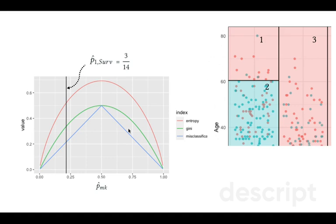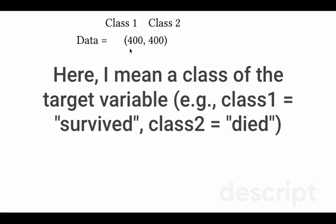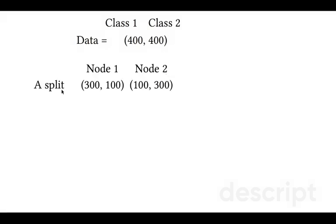Now why do we want to use Gini index or entropy index instead of misclassification error? Look at this hypothetical example. Suppose we have 800 observations, 400 of them belonging to class 1 and 400 belong to class 2. And assume our tree proposes a split. It proposes to split data such that node 1 would be 300 observations from class 1 and 100 observations from class 2.